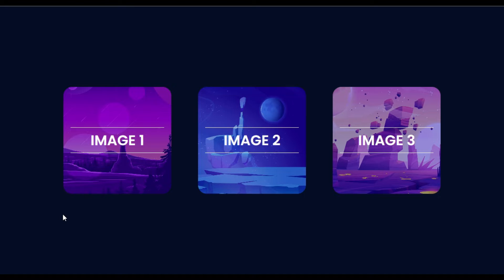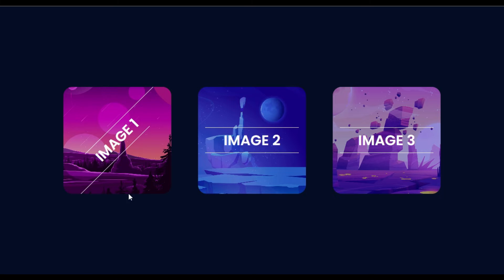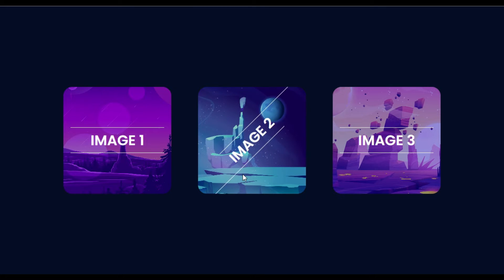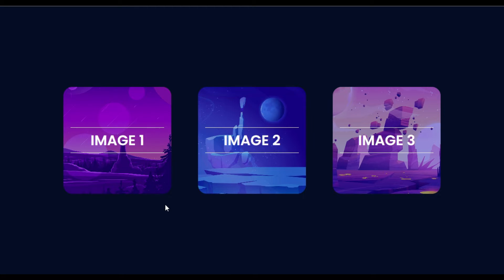Hi guys, welcome back to Software Share Tech. Today in this video I am going to show you how you can add an image diagonal hover effect like this into your Elementor page. You can see I have these images, and when I hover over them the text over the images turns into a diagonal shape. I will also show you how you can add links in it.